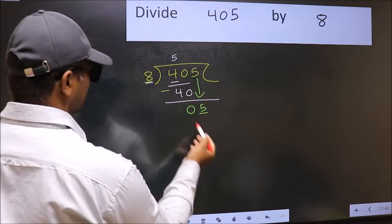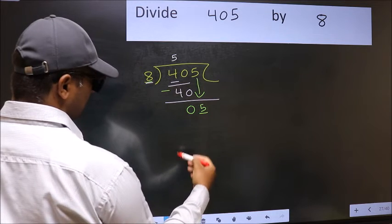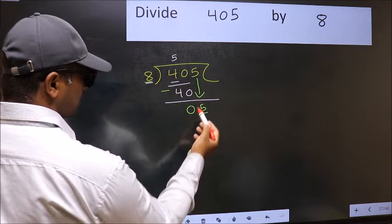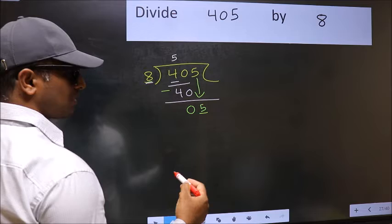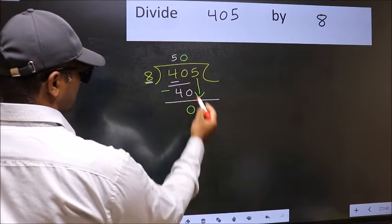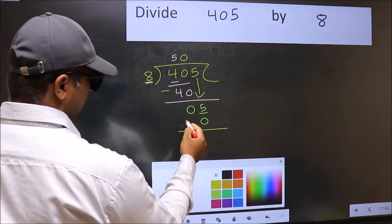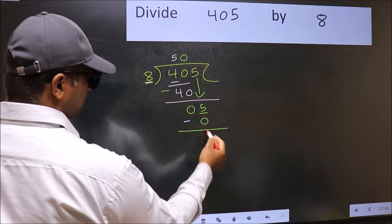We will get 8, but 8 is larger than 5. So what we should do is, we should take 0. So 8 into 0 is 0. Now you should subtract. 5 minus 0 is 5.